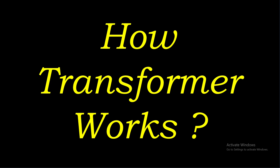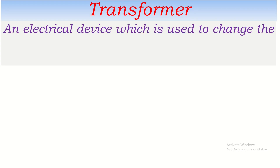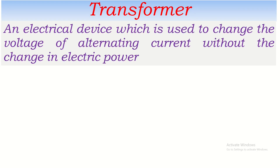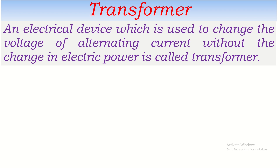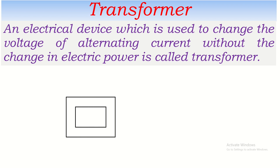Let's talk about the transformer — what it is and how it works. A transformer is an electrical device which is used to change the voltage of alternating current without the change in electric power. It is used to convert high voltage AC into low voltage AC, or low voltage AC into high voltage AC, but it never changes electric power.